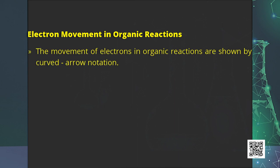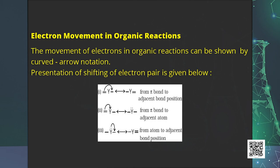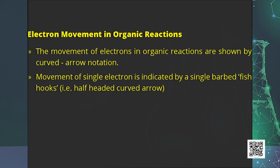Our next topic is electron movement in organic reactions. The movement of electrons is shown by curved arrow notation, which shows how changes in bonding occur during the reaction. A curved arrow starts from where an electron pair is shifted and ends at the location to which it moves — from a pi bond to an adjacent single bond, from a pi bond to an adjacent atom, or from atom to adjacent atom. In homolytic fission, movement of a single electron is shown by a half-headed curved arrow.